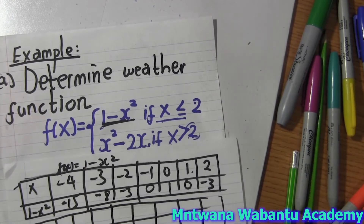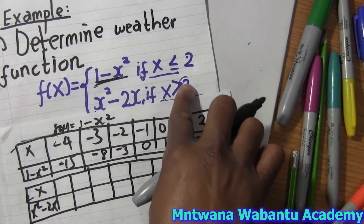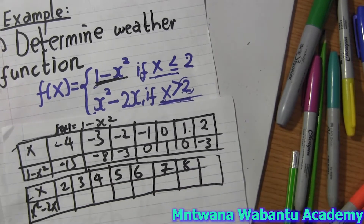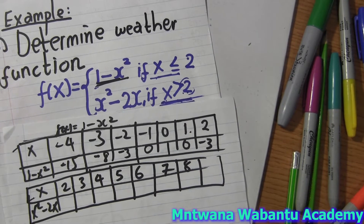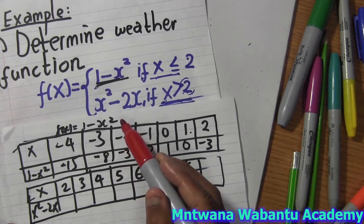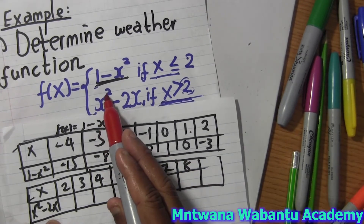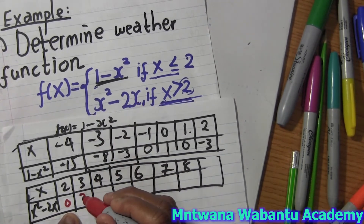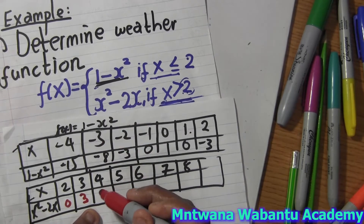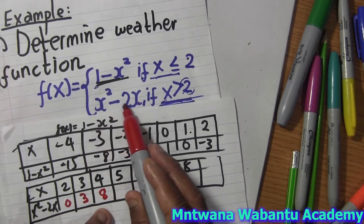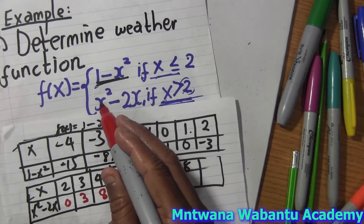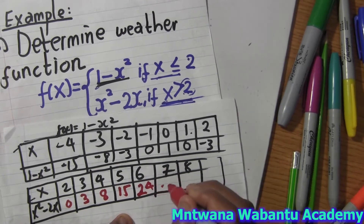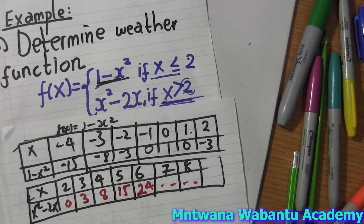So where does it start? It starts from x = 2, greater than 2. When x = 2: 4 - 4 = 0. When x = 3: 9 - 6 = 3. When x = 4: 16 - 8 = 8. When x = 5: 25 - 10 = 15. When x = 6: 36 - 12 = 24. So we have all the coordinates to draw the graph.